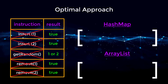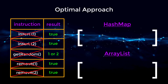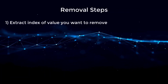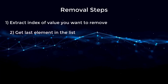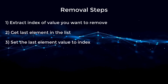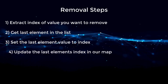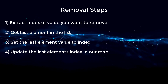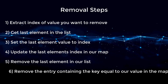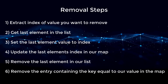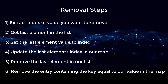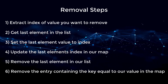Removing is by far the hardest part of this design question, but the steps are fairly simple. First, extract the index of the value you want to remove. Second, get the last element in the list. Third, set the last element's value to that index. Fourth, update the last element's index in the map. Fifth, remove the last element from the list. And finally, remove the entry containing the key equal to our value from the map. You can pause here to read these steps in depth, but let's jump into the code.